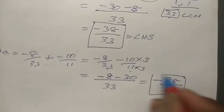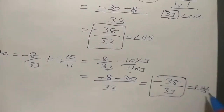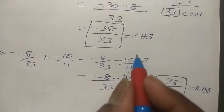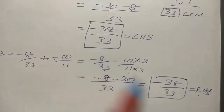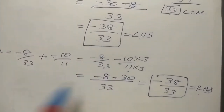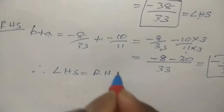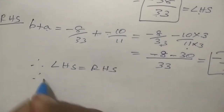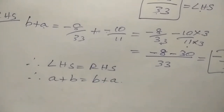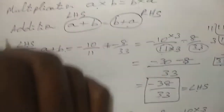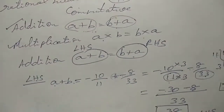Comparing left hand side and right hand side, both equal minus 38 by 33. Therefore, a plus b equals b plus a. So for addition, we have proved the commutative property. Now we go for multiplication.